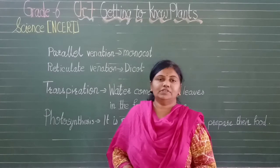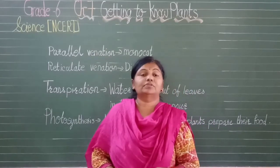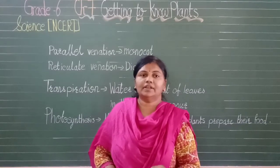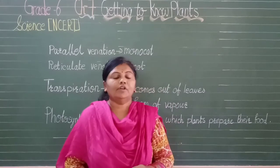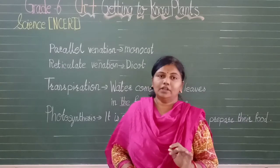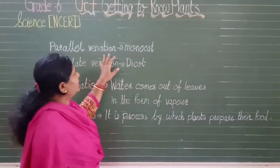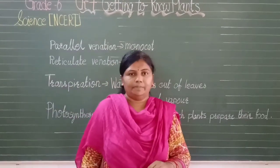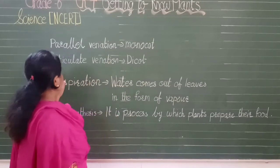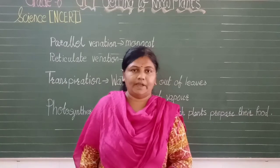Stem carries water and minerals to the different parts of the plant. Parallel venation is always found in monocot type of plants, while reticulate venation is always found in dicot type of plants.